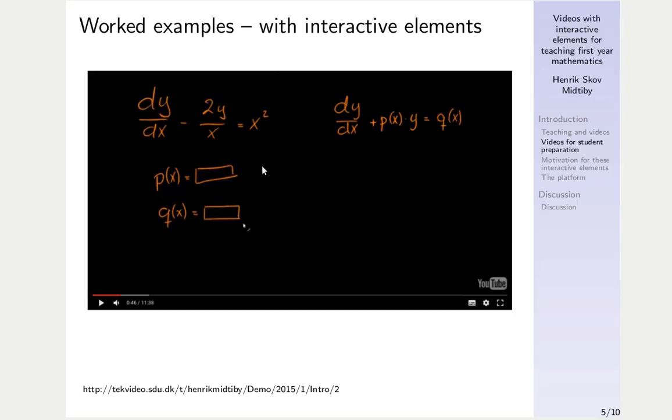At this point the video pauses and at the location indicated here with squares, two text boxes appear where the students can write what they think should be the value of p of x and q of x. Then they can enter their answer and the system will then grade them according to correctness. If what was filled into the box is correct, the box is shaded with a green color, otherwise the background changes to red.